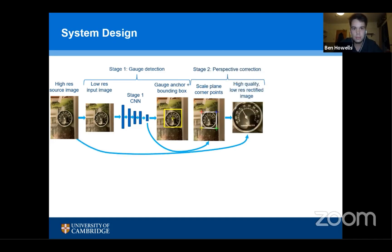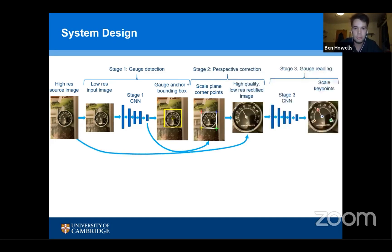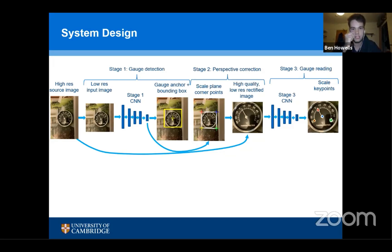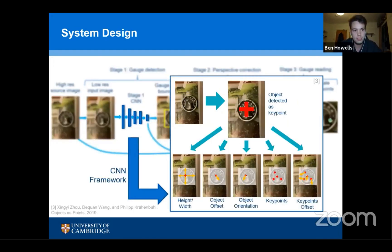We then use this rectified image as input to a second neural network which produces gauge reading key points. We use two convolutional neural networks with two input images to keep input image resolution low for high computational efficiency on mobile, while also ensuring a high quality image for stage three for accurate reading. The CNNs are based on a single-stage framework called CenterNet, which detects objects as key points, using the MobileNet V2 backbone.